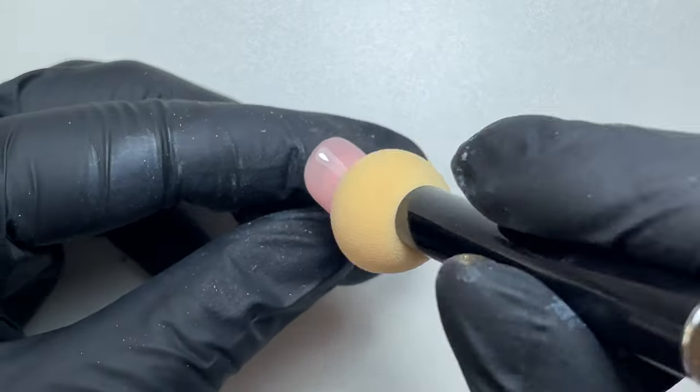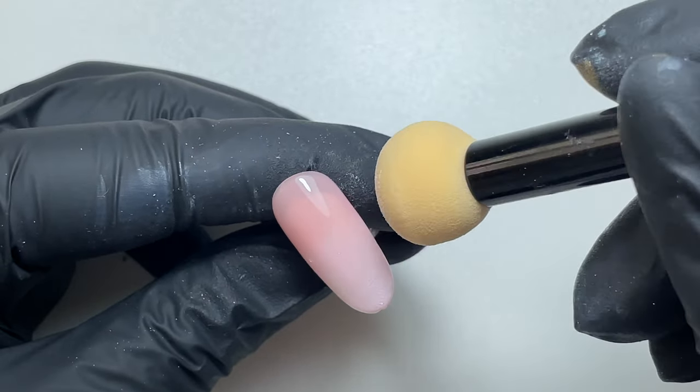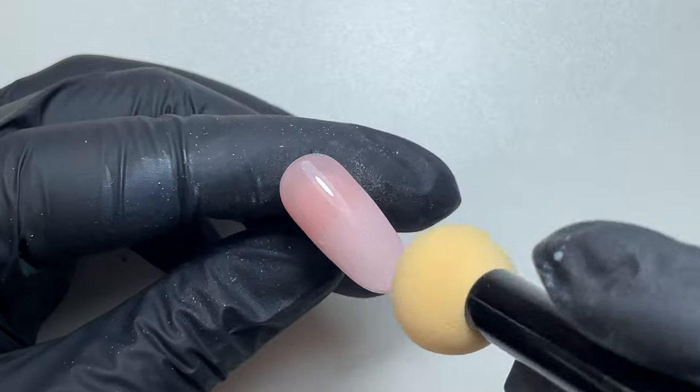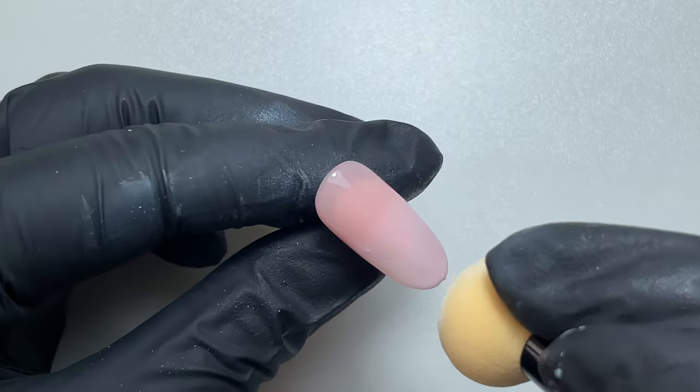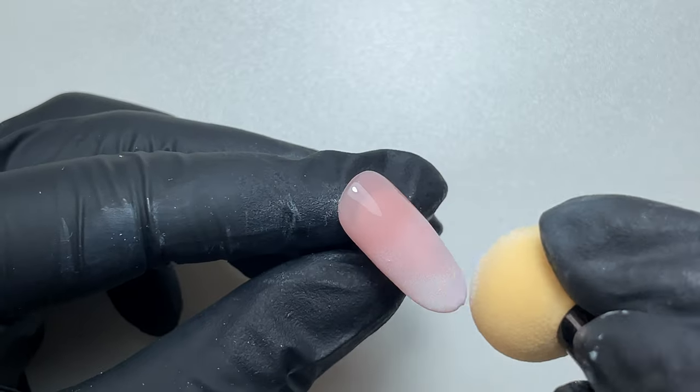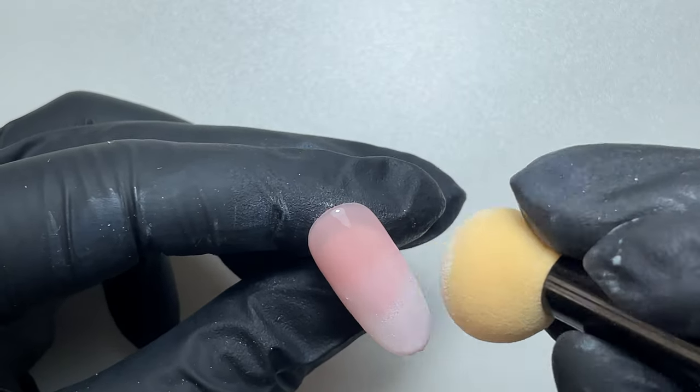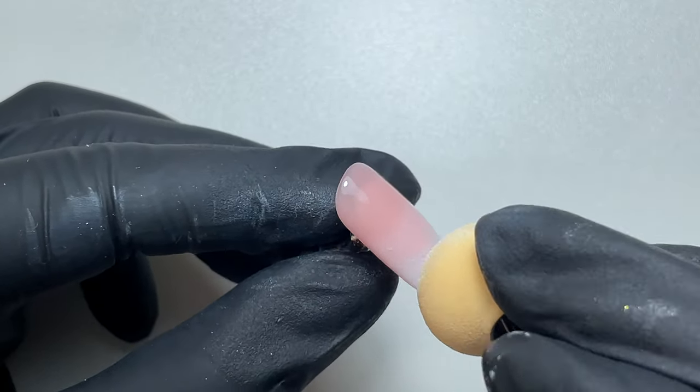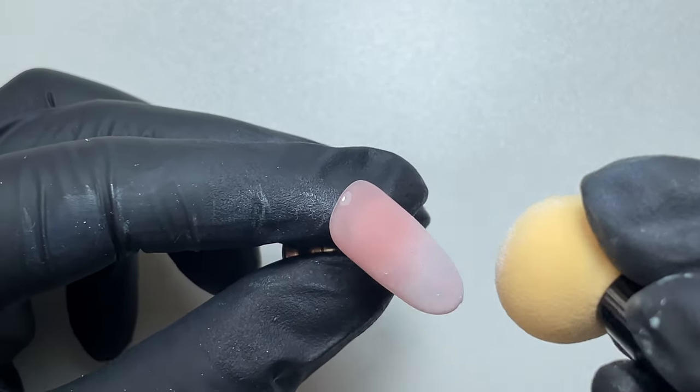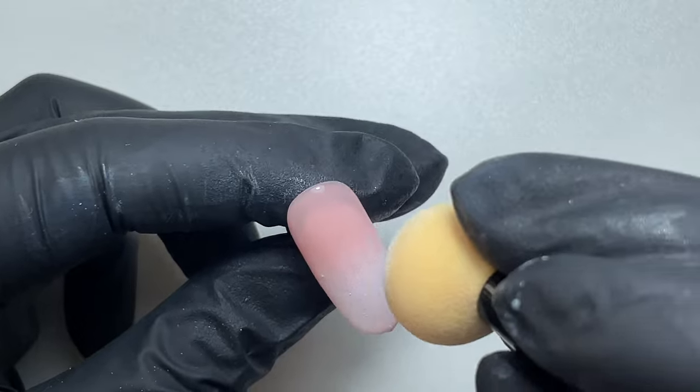So once I'm happy with the application here, I'm going to pop that in the lamp to cure before we move on to the second layer. I've cured that for 30 seconds and I'm going to move on to the second layer. So again we're starting at the bottom and you can see the pigment starting to pull through a little bit more. I'm just going to work that product further up the nail until I'm happy with how far up it goes.